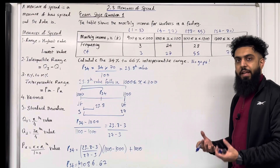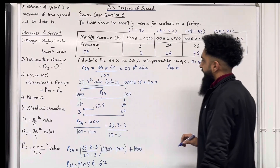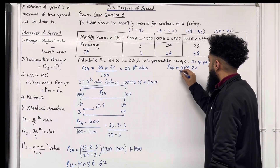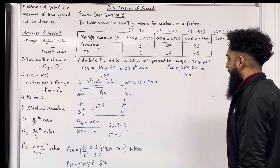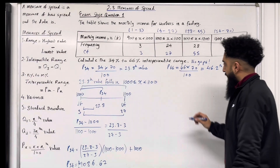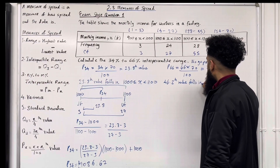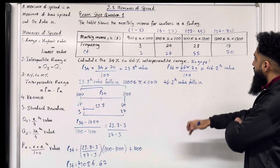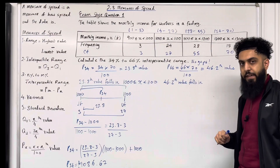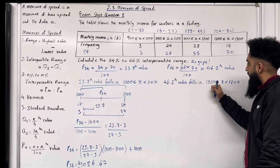Now let's work out the 66th percentile, P66. P66 is equal to 66 multiplied by the sample size 70, divided by 100. Putting this into the calculator, we get the 46.2th value. Now the 46.2th value falls in the class interval 1100 to 1200, because 46.2 is between 28 and 55. So it falls in 1100 to 1200, where 1100 is included.